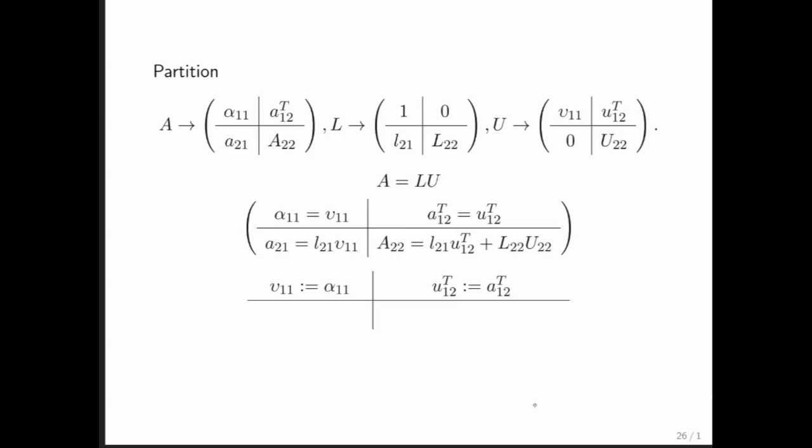Now things get a little trickier. By the time we get here, we know what ε₁₁ is because we know it's equal to α₁₁. We know what A₂₁ is. And L₂₁ can just be computed as A₂₁ divided by ε₁₁, which of course is just α₁₁.